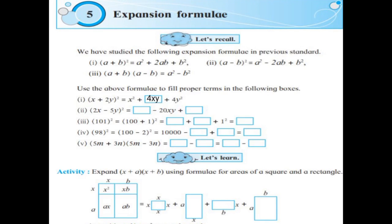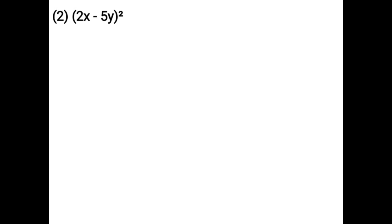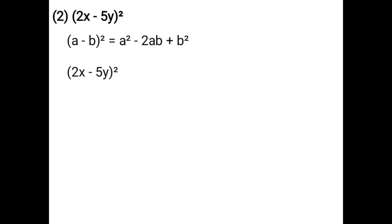Next: (2x − 5y) whole square. You have to use the formula of (a − b) whole square. The formula of (a − b) whole square is a² − 2ab + b². Here a is 2x and b is 5y. You have to write the expression form: a² − 2ab + b², that is (2x)² − 2 × 2x × 5y + (5y) whole square.